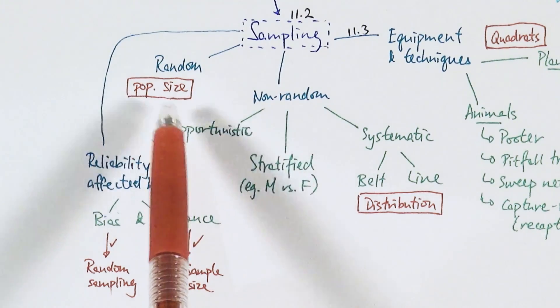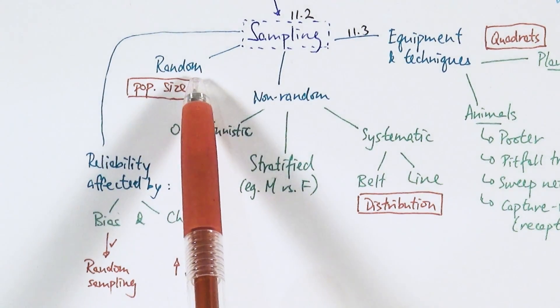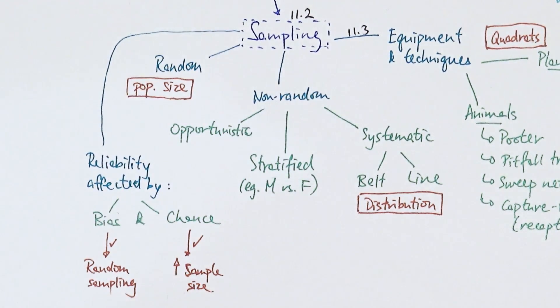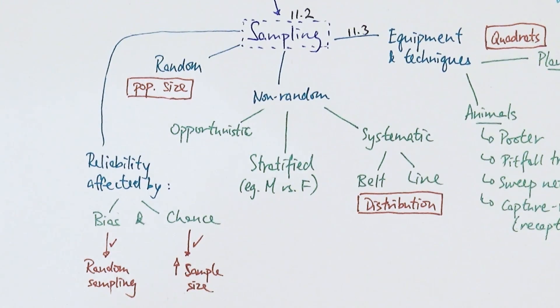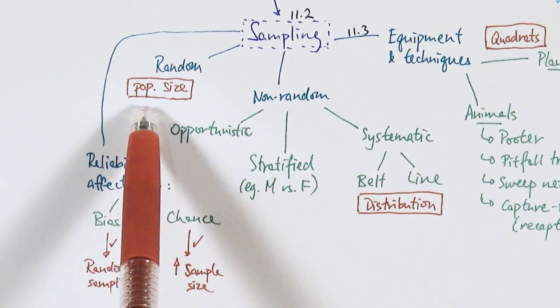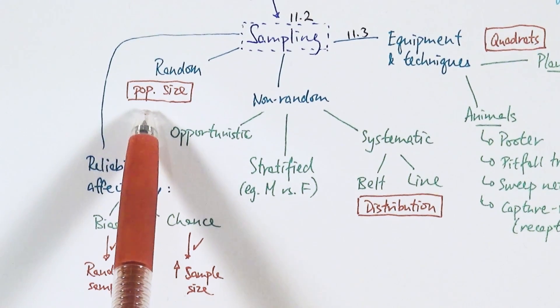First, random sampling. You probably know this from practicals—you get a random coordinate in a particular area, say a 20 meter by 20 meter grid, put your quadrat down, and count the number of individuals you see. Random sampling is usually used to estimate population sizes.